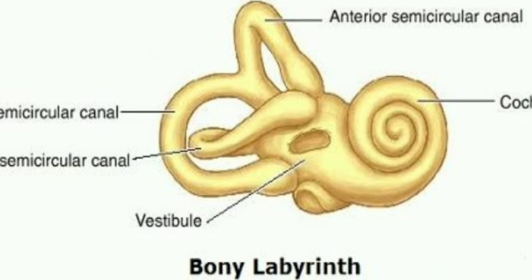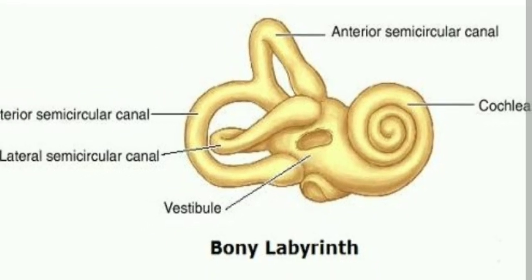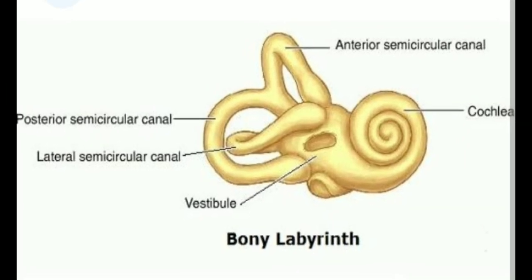Posterior to that there are three semicircular canals — half circle-like canals. The anterior semicircular canal, also called superior, is present in the sagittal plane. The posterior semicircular canal is present in the coronal plane, and the lateral semicircular canal, also called the horizontal semicircular canal, is present in the horizontal plane.